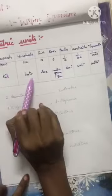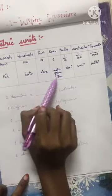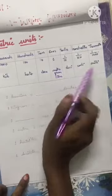Here if you see, it is kilo, hecto, deca, meter/gram/liter, deci, centi, milli. These are smallest, these are biggest.